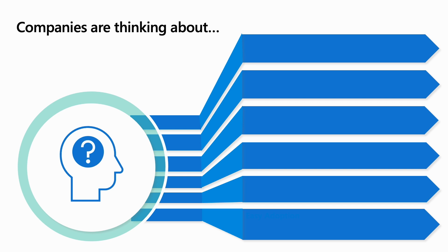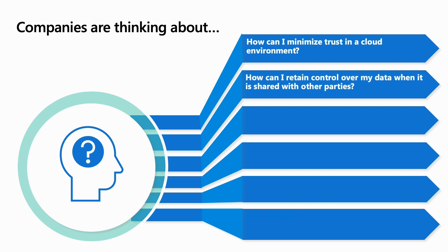We will discuss the background around the confidential consortium framework and its related technologies. Many companies are dealing with sensitive data requiring confidentiality, and they make sure that only authorized people have access to it. They want to keep the trust as minimal as possible, even excluding the cloud provider. These companies want to share data with multiple parties for specific purposes, yet retain control over the data — what they're looking for is customizable governance.